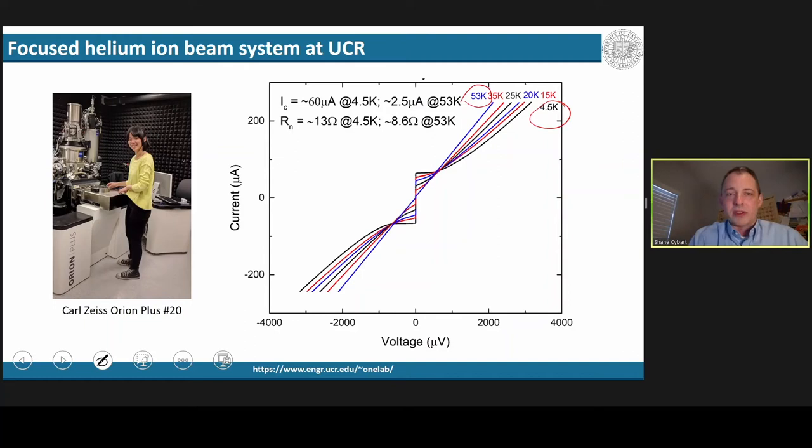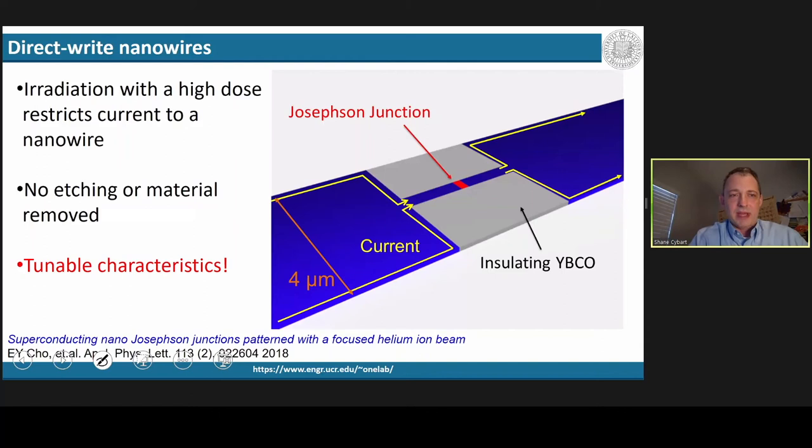A second innovation that we came up with is called direct-write nanowires. Most conventional high-TC devices don't have any feature sizes less than about two to three microns. And this is a challenge because as you try to pattern the material smaller, the oxygen runs out and the material doesn't superconduct anymore. The same process of the ion damage also will disorder the material.